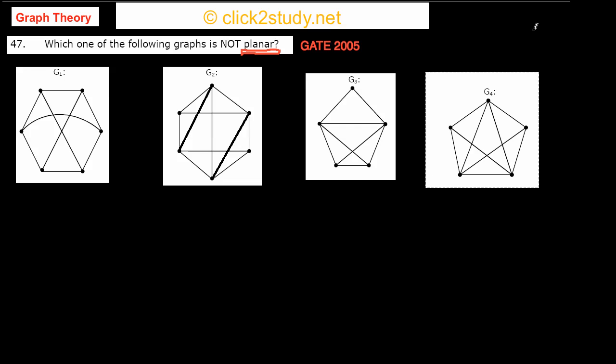We start our next problem: which one of the following graphs is not planar? We are given four graphs G1, G2, G3, and G4. Out of these four graphs, three are planar and one is not planar, and we have to tell which one is not planar.